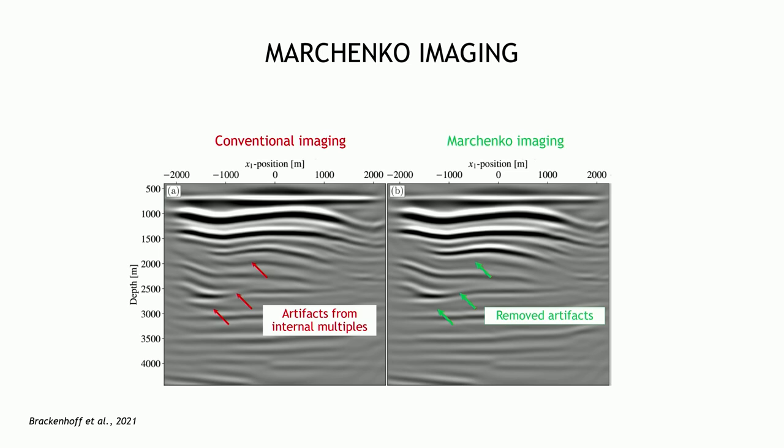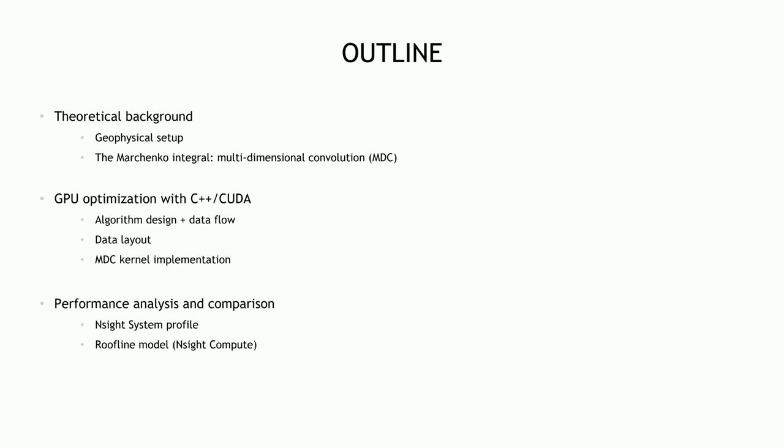This is an example taken from Brackenhoff et al. 2021. On the left you have the RTM — the conventional image — and the red arrows are pointing towards spurious reflectors. These correspond to internal multiple artifacts, which could be wrongly interpreted as a physical boundary. With Marchenko imaging you can remove such artifacts.